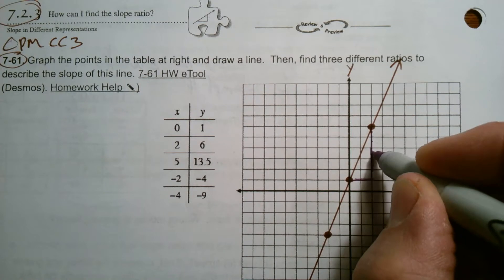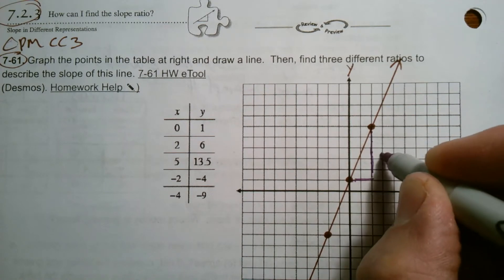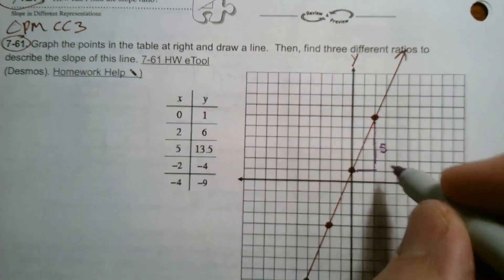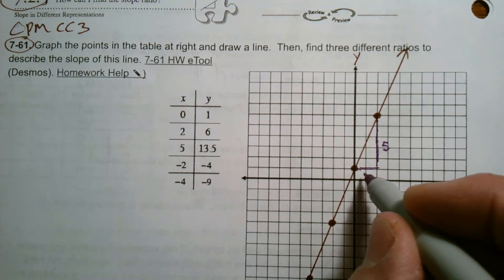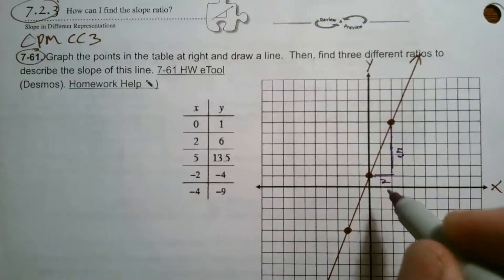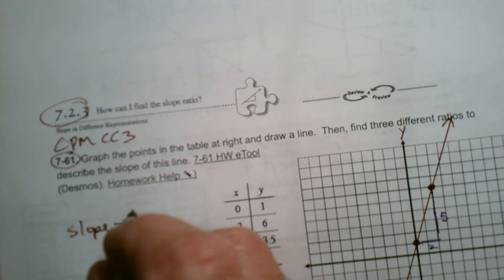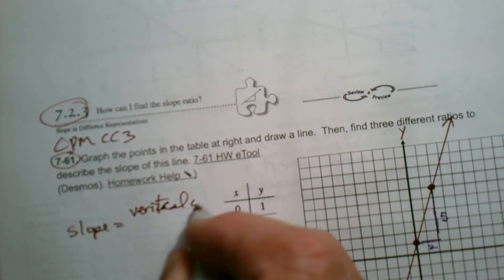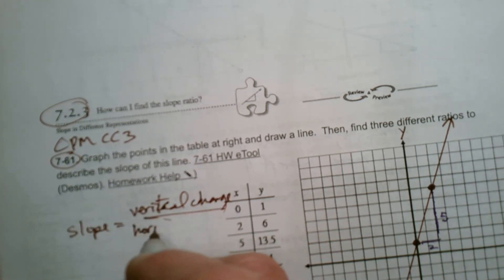So I can see from this point to this point, there's a slope triangle. And that's one, two, three, four, five, one, two. So it's a vertical distance of five and a horizontal distance of two. Remember that slope is always your vertical change over the horizontal change.